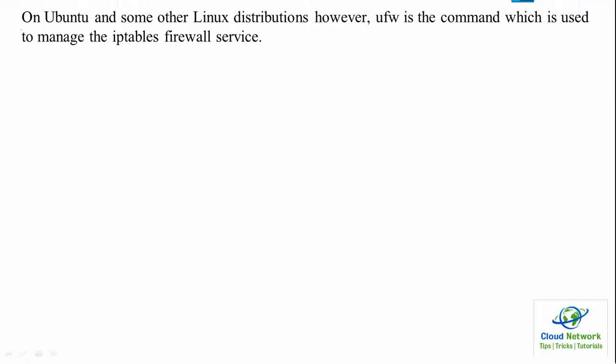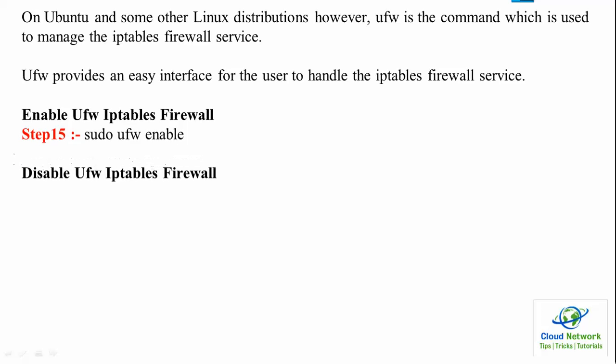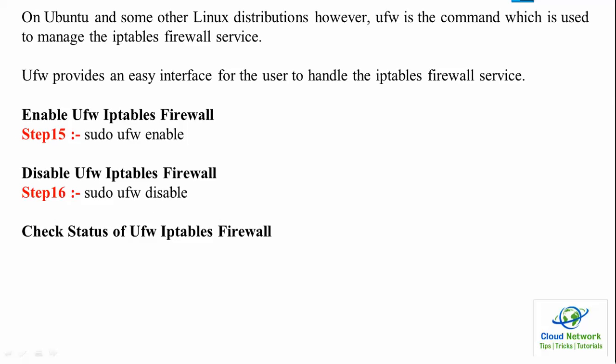These procedures also apply to Ubuntu and other Linux distributions. UFW is the command used to manage IP tables services on Ubuntu. Ubuntu uses IP tables and UFW — enabling UFW means enabling IP tables on Ubuntu, Debian, and Linux Mint. To disable UFW use sudo ufw disable, and to check its status use sudo ufw status.